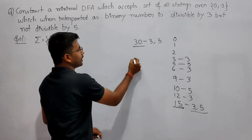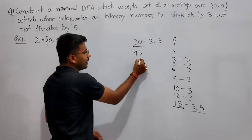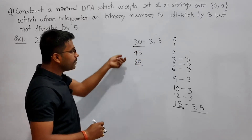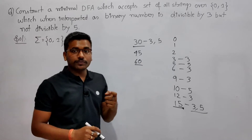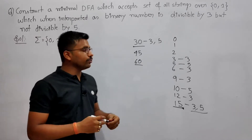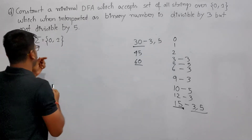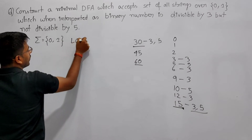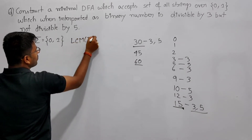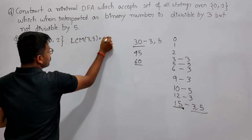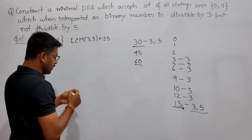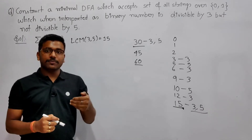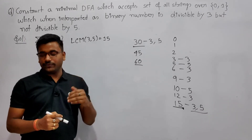So 15, 30, 45, 60 are numbers divisible by both. We can determine numbers divisible by both using LCM. The LCM of 3 and 5 is 15, as we have seen. So if any number is divisible by 15, it means that number is divisible by both 3 and 5.